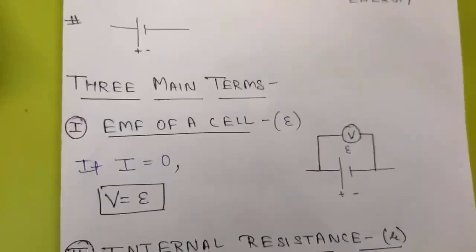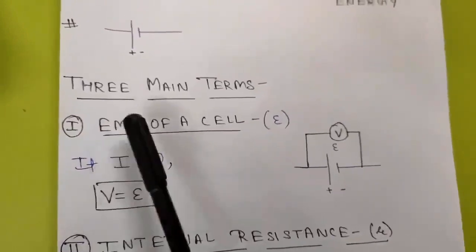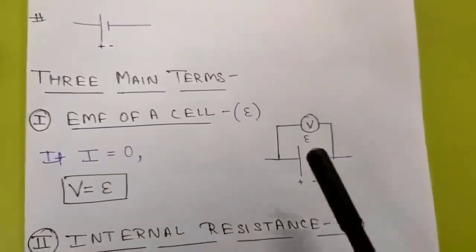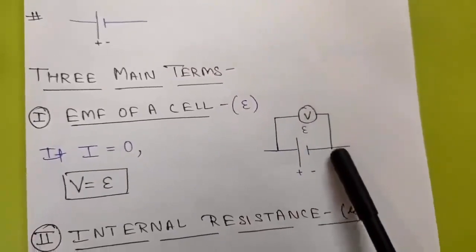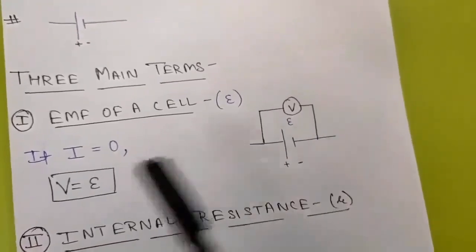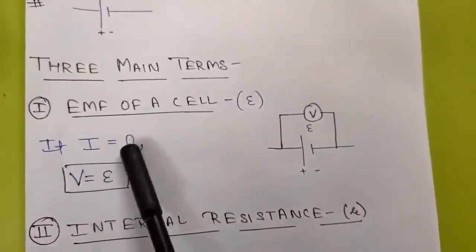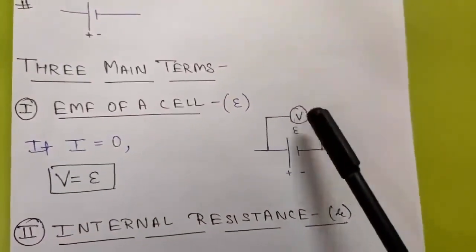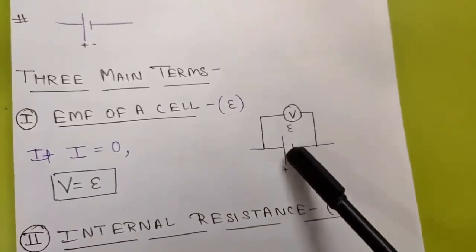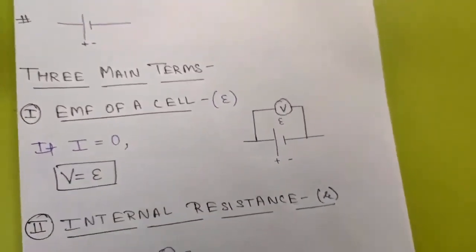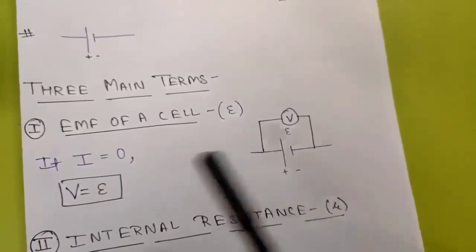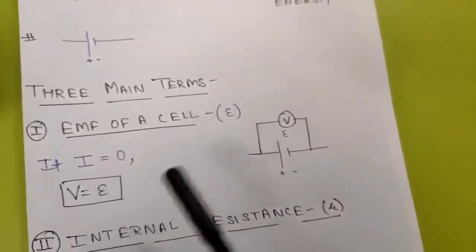We will discuss three main terms of a cell. The first is EMF of a cell, denoted by the symbol E. Let us suppose this is a cell with a voltmeter connected across it and the EMF of this cell is E. Initially, if no current is flowing through this circuit — if I is zero — then the voltmeter will read a voltage equal to its EMF. So V will be equal to E in this case. The EMF of a cell is defined as the potential drop across the electrodes of a cell when no current is flowing through it.